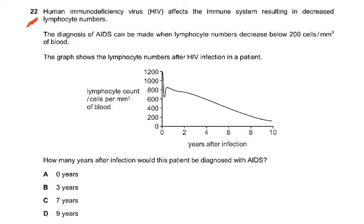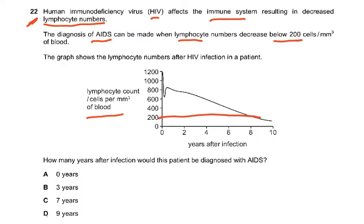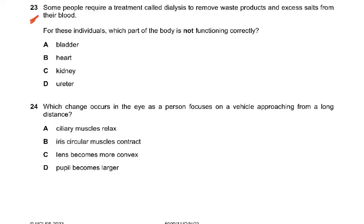Question 22: Human immunodeficiency virus HIV affects the immune system, resulting in decreased lymphocyte numbers. The diagnosis of AIDS can be made when lymphocyte numbers decrease below 200 cells per millimetre cubed. Looking at the graph, draw a line at 200 and see where the count goes below that — it's at nine years. So the answer is D.